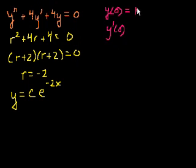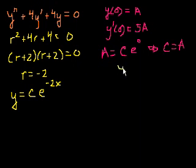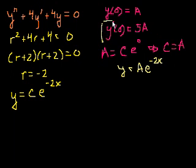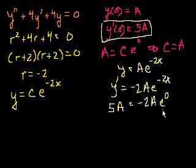For example, say y(0) equals a and y'(0) equals 5a. If y(0) = a, then a equals c times e to the minus 2 times 0, so c equals a. Our particular solution would be y equals a·e^{-2x}. But then y' equals minus 2a·e^{-2x}, and the second condition says 5a equals minus 2a·e^0, meaning 5a equals minus 2a — which we know is not true.